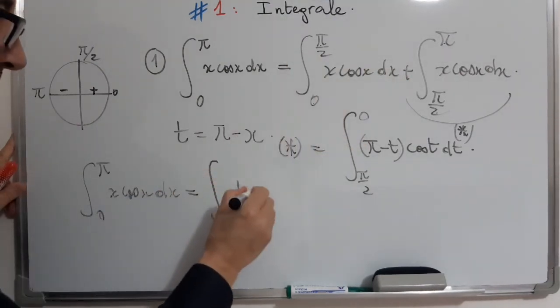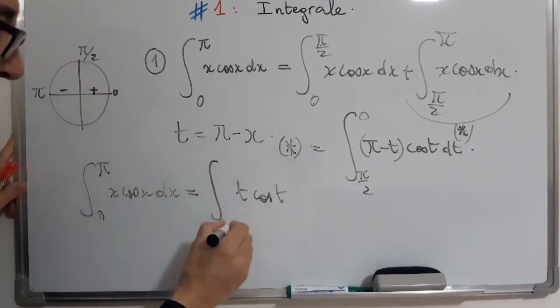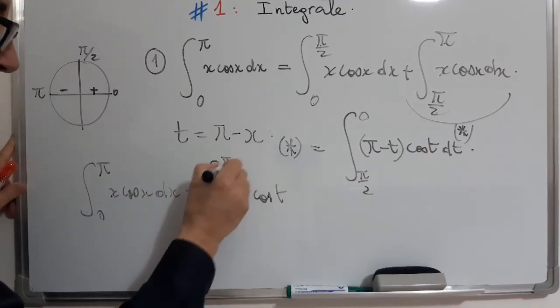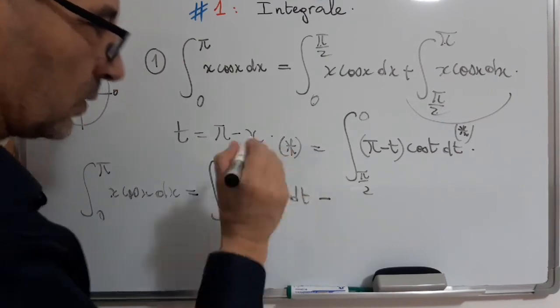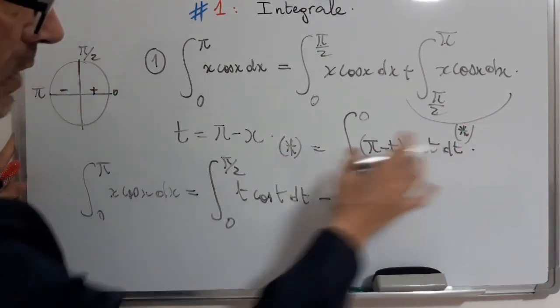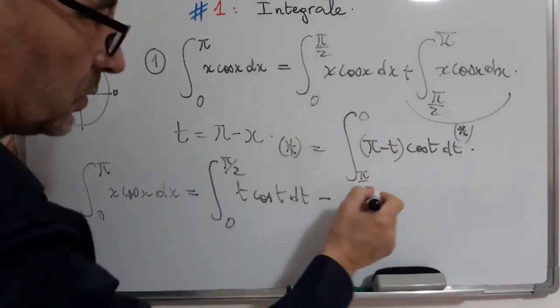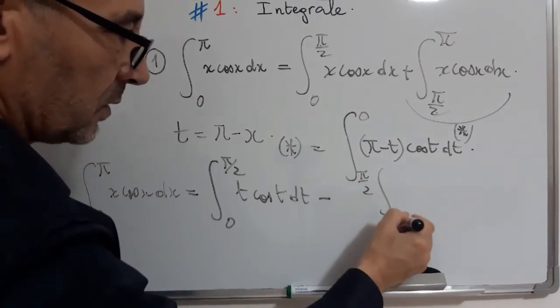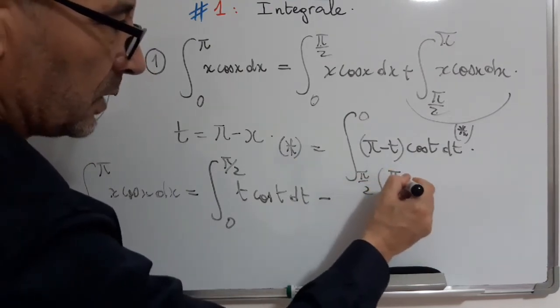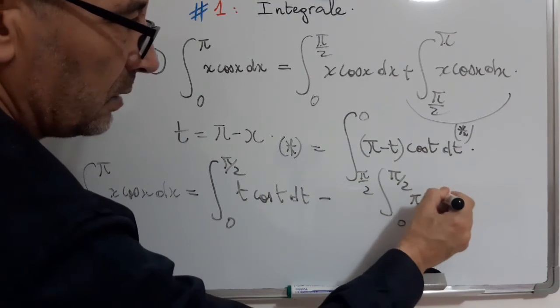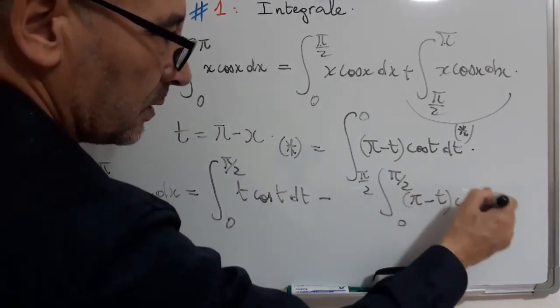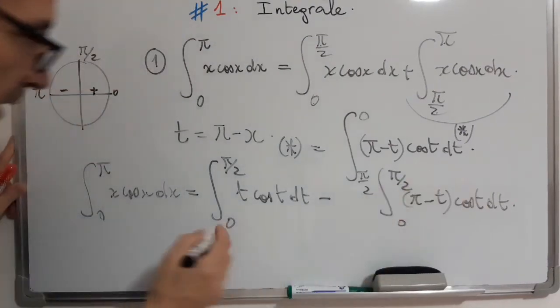So, the first one: 0 to π over 2 t cos t dt minus... minus to change the order of the bound. So, the final calculation will be equals π over 2 to π minus t cos t.